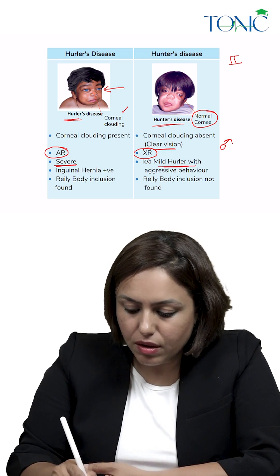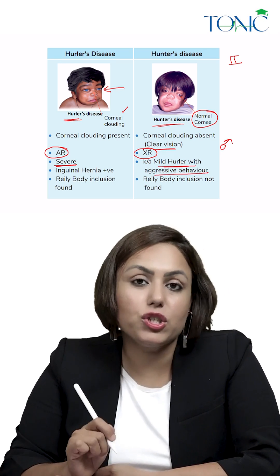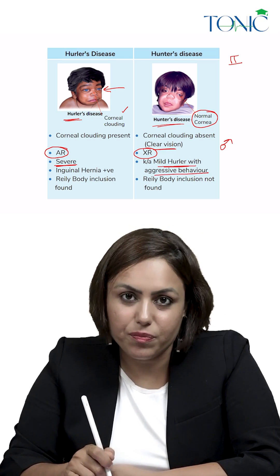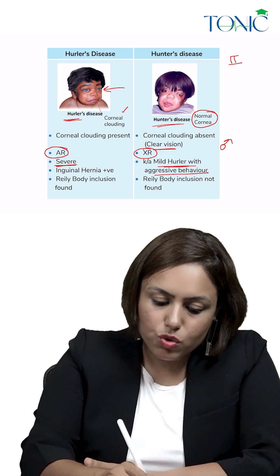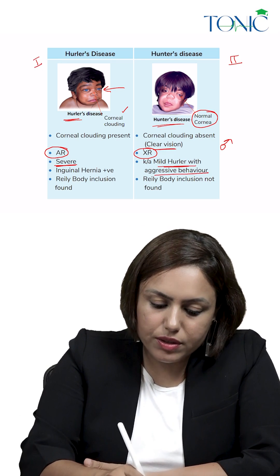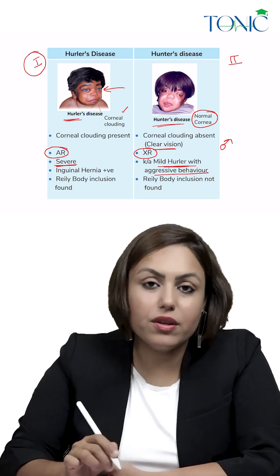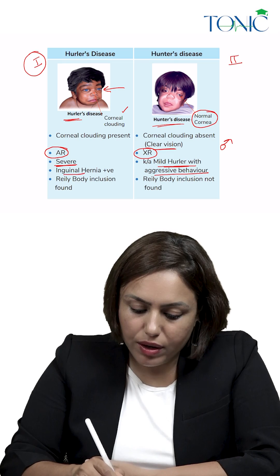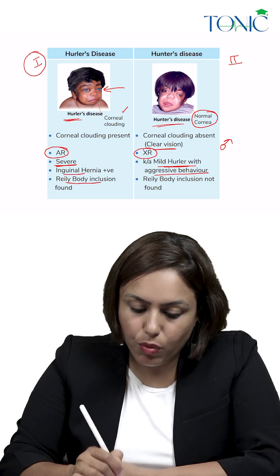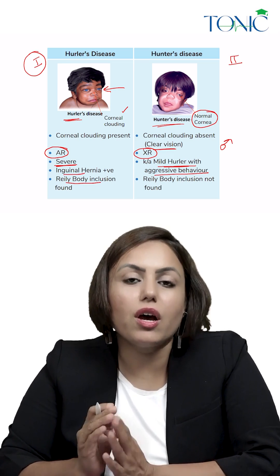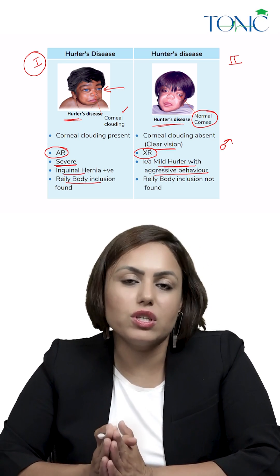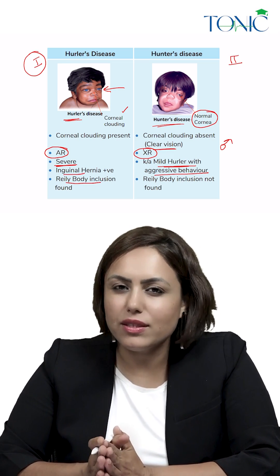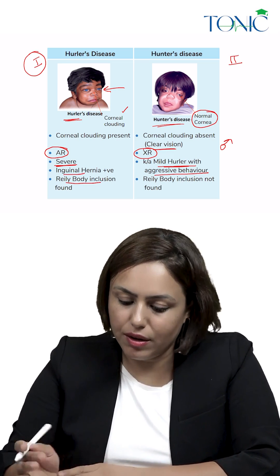However, Hunter patients have aggressive behavior. Hurler is Type 1 and Hunter is Type 2. Inguinal hernia and Reilly body inclusions are usually found in Hurler disease and are less common in Hunter disease.